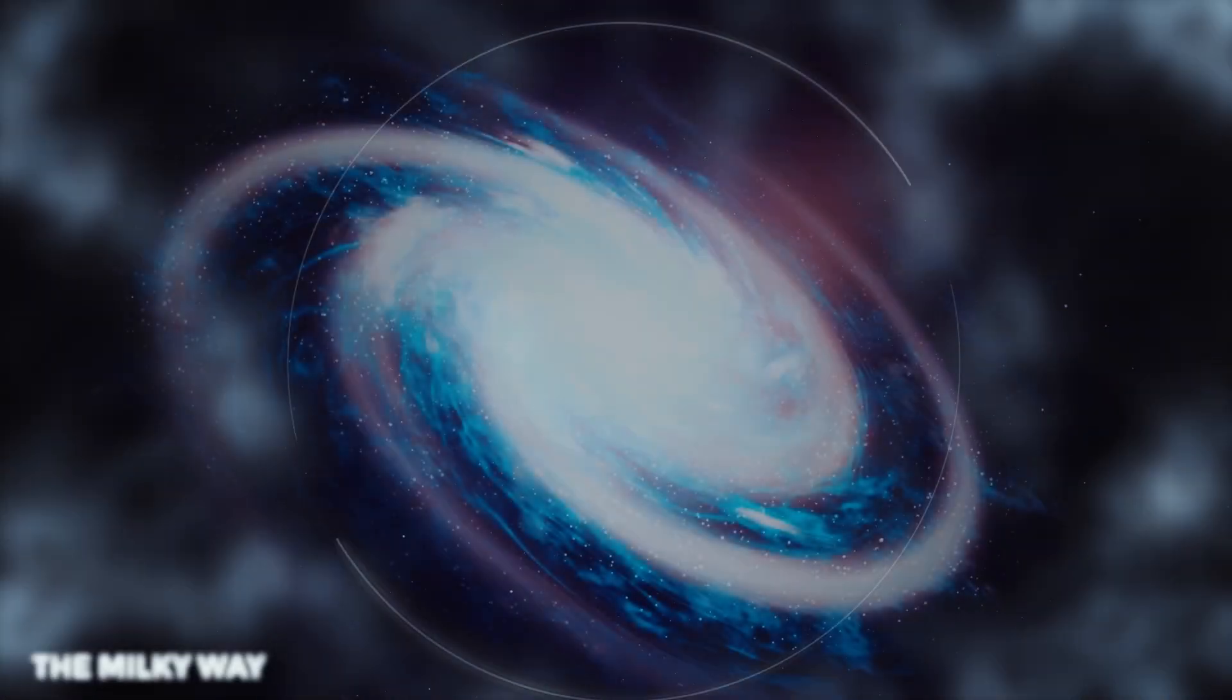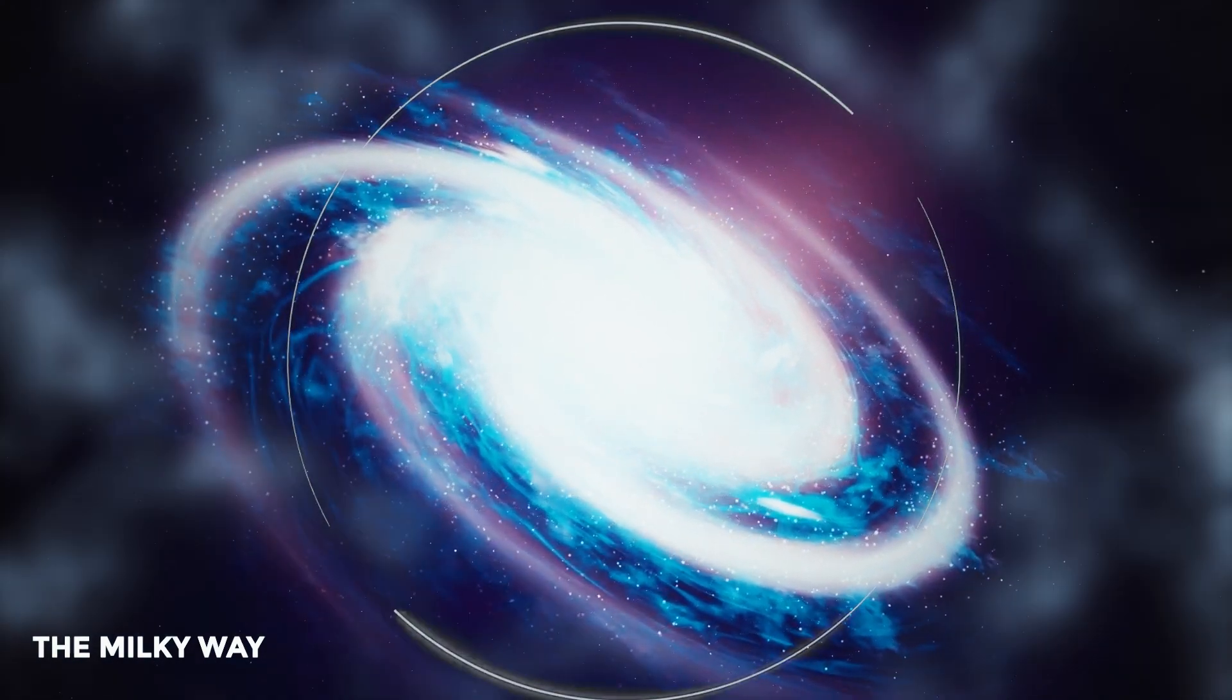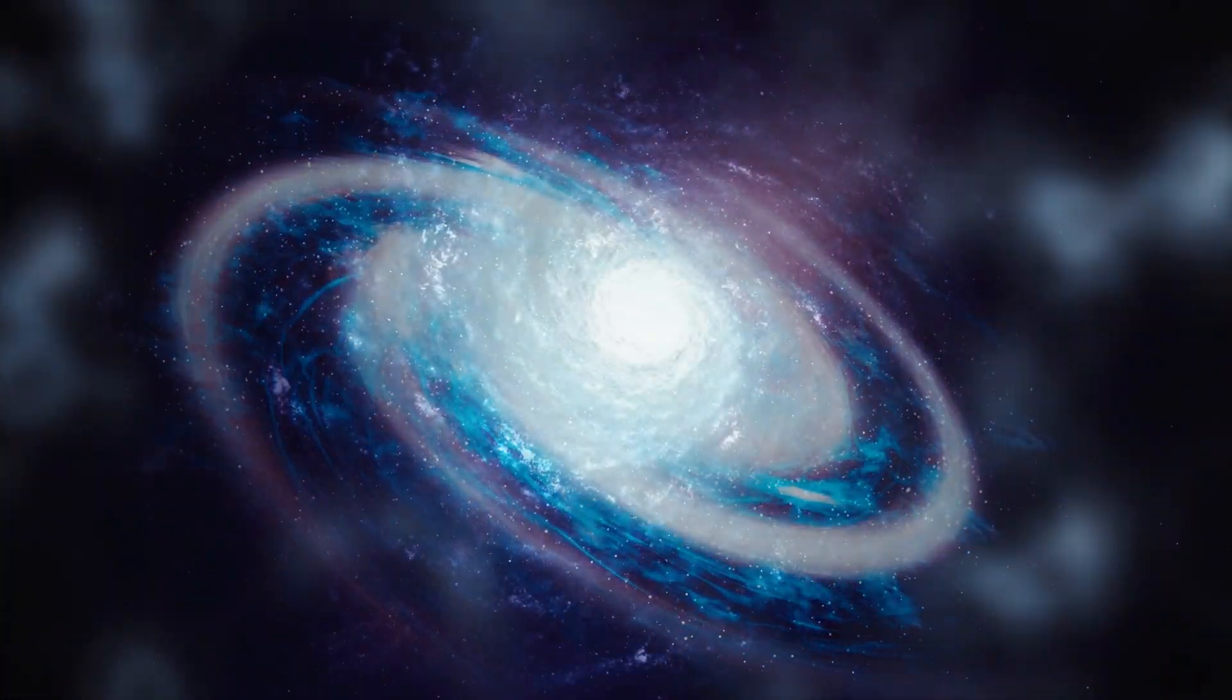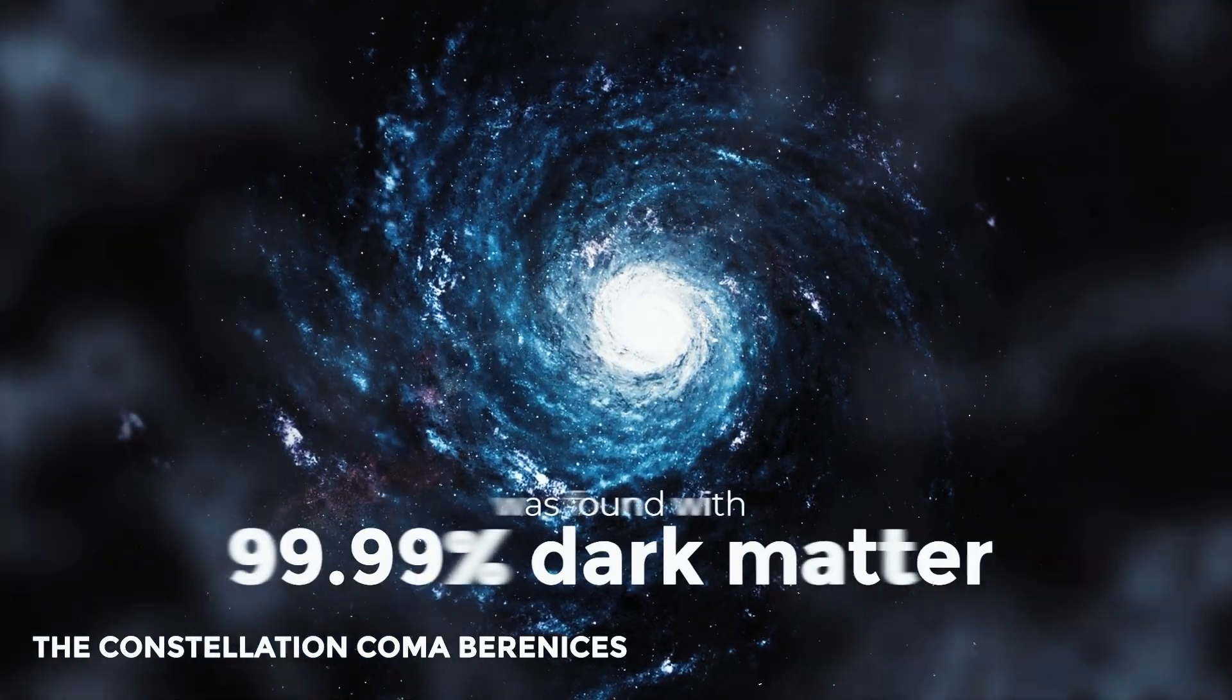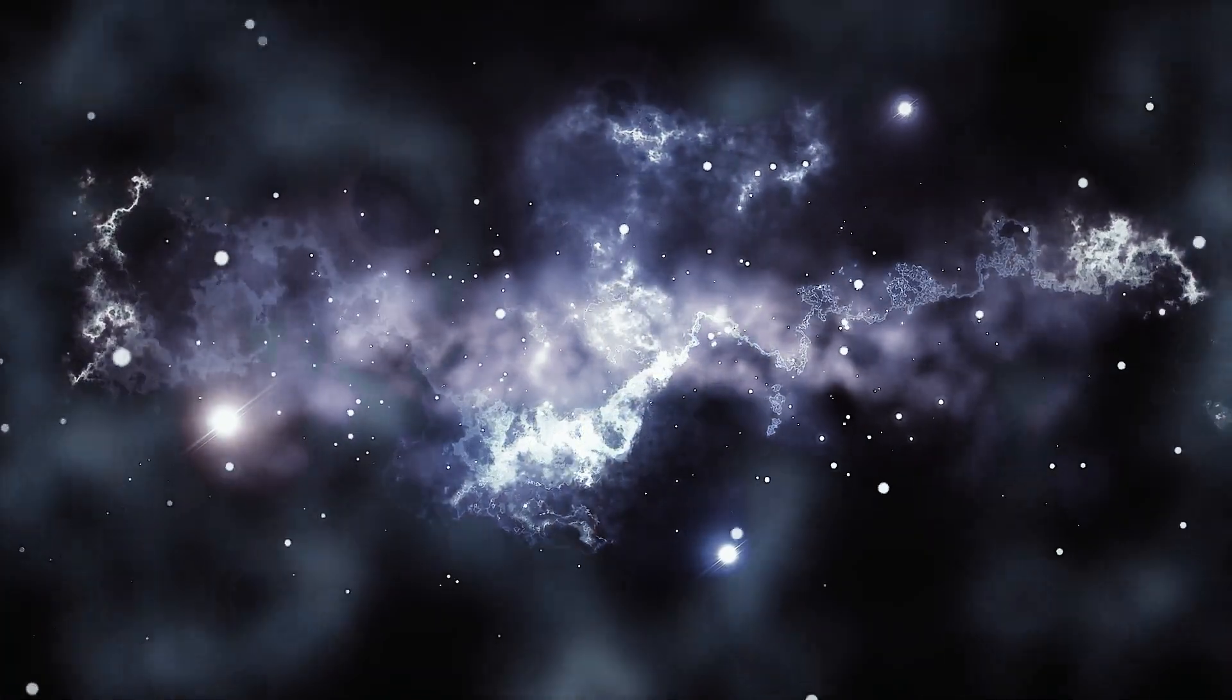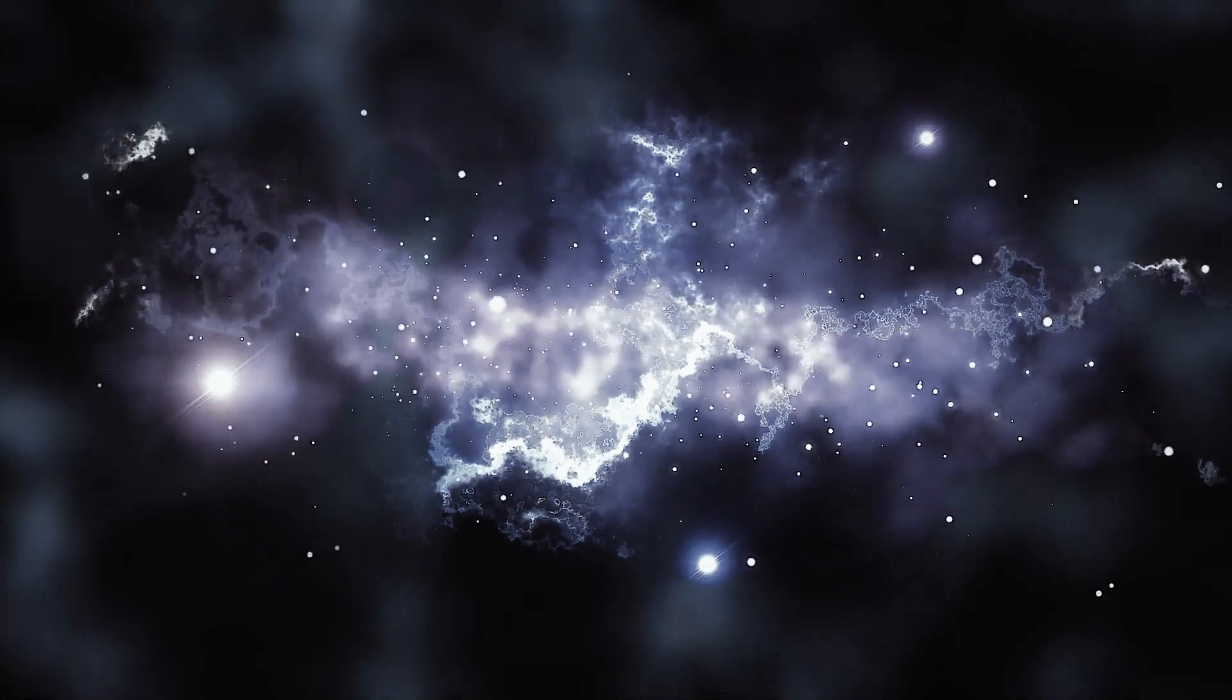For instance, the Milky Way is surrounded by a vast sphere of dark matter, with twice the amount of dark matter as visible matter. In the constellation Coma Berenices, a galaxy was found with 99.99% dark matter. This suggests that there may be some extremely dark and mysterious events occurring in that region.